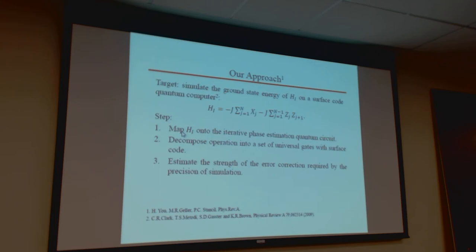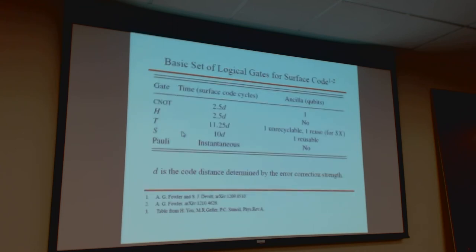Let's go to our simulation. This time we simulate the ground state calculation of the IC model. Here X and Z are Pauli-X and Pauli-Z matrices. We actually mapped this to the system. The set of universal gates, which I showed just now, is defined for the relevant operations.